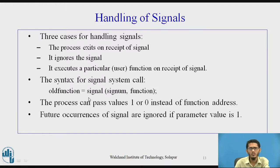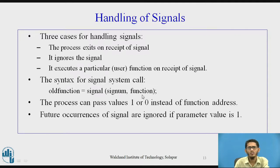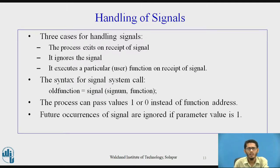The syntax for the signal system call is: old_function = signal(signum, function), where signum is the signal number for which the procedure is to be done, and function is the address of the user-defined function to be executed on receiving the signal indicated by signum. The return value old_function is the value of function for the most recent call to signal for signum. The process can pass value 1 or 0 instead of the function address, and future occurrences of the signal are ignored if the parameter value is 1.